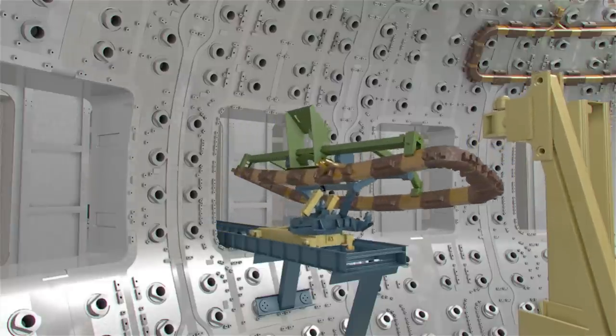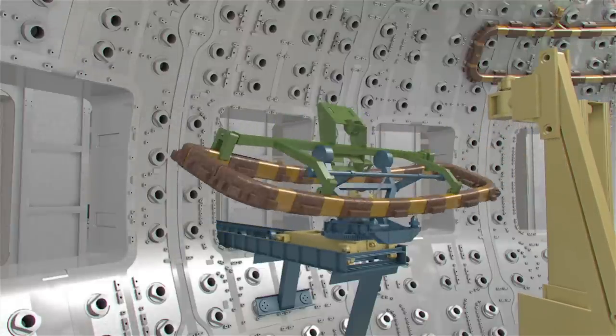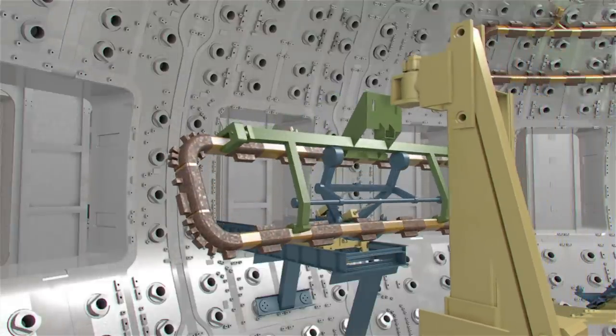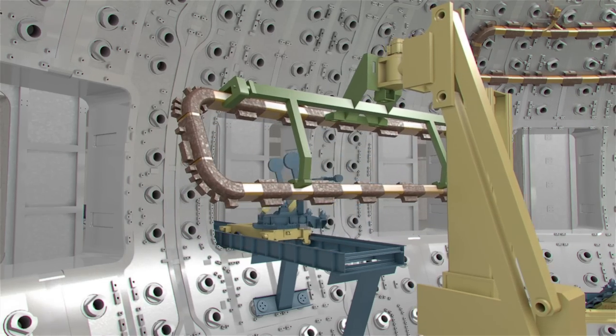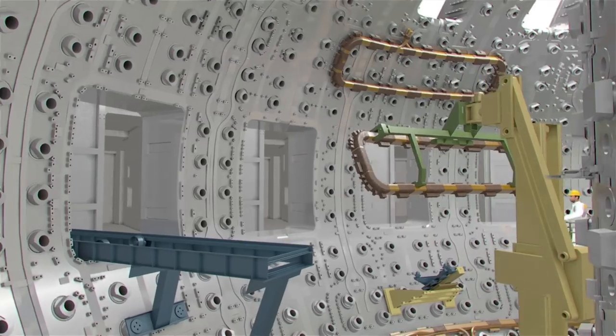The ELM coils will be delivered to the vacuum vessel using the throughput transfer system. This 20m long delivery line is the workhorse amongst all the assembly tools, the jack of all trades.